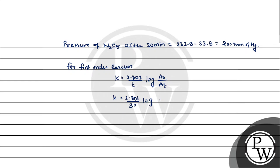Then log of 233.8 over 200. When you solve this, it comes out to be 5.2 times 10 to the power minus three minute inverse.